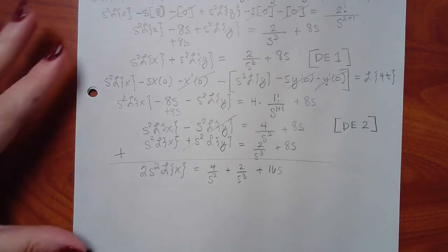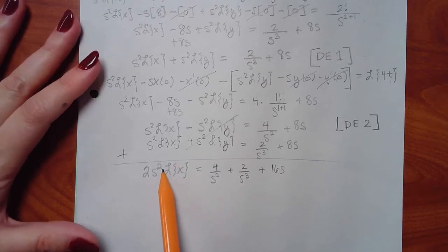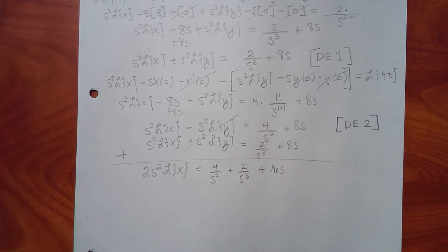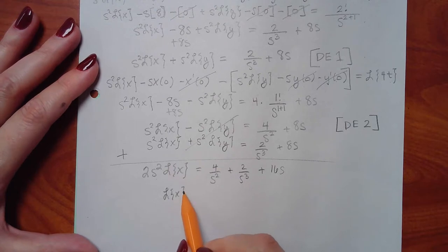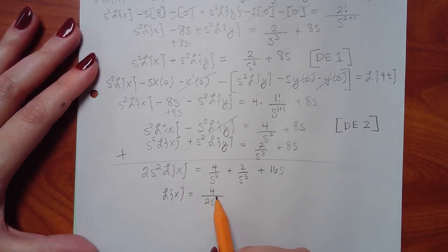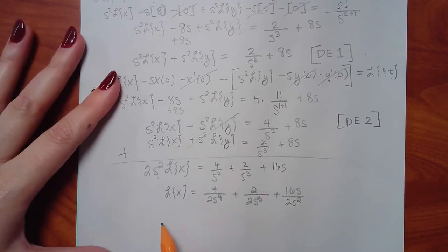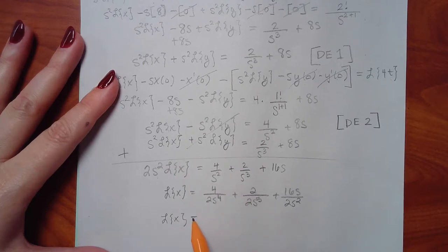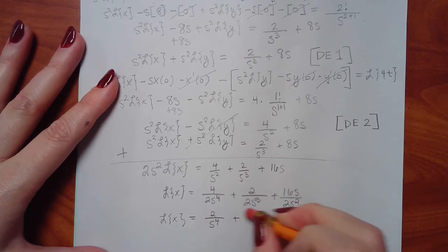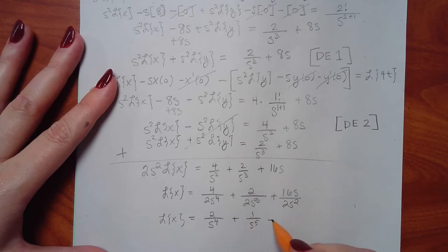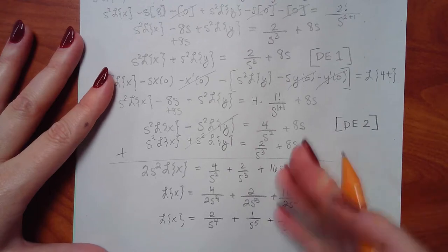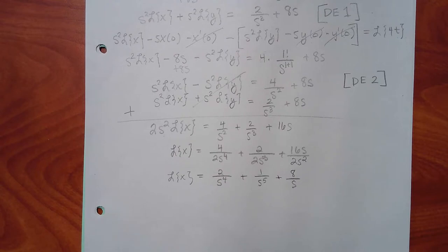Divide everything by 2s squared. That puts a 2s squared in the denominator of every term. So L{x} equals 4 over 2s to the 4th, plus 2 over 2s to the 5th, plus 16s over 2s squared. Simplifying: L{x} equals 2 over s to the 4th plus 1 over s to the 5th plus 8 over s.